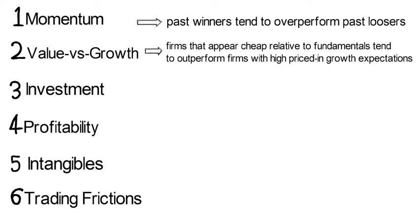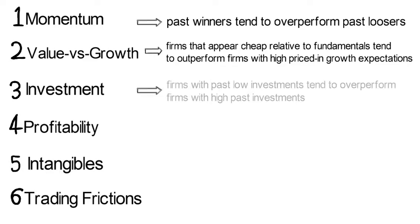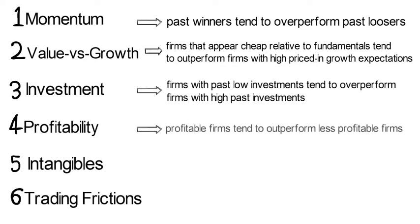Investment-related anomalies say that firms with past low investments — which, importantly, are firms with high expected investments — tend to outperform firms with high past investments or low expected investments. Profitability says that profitable firms tend to outperform less profitable firms.